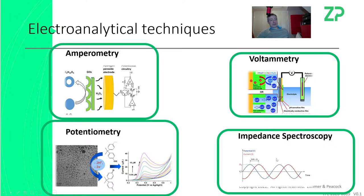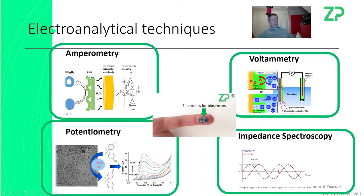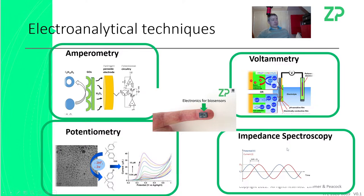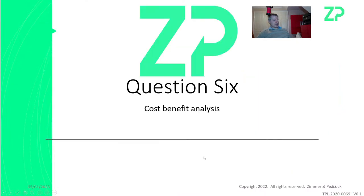That potentiostat doesn't do impedance spectroscopy — there's a different model for that. But it's okay to start, since most of our sensors are either amperometric or potentiometric. We do use impedance for the conductivity sensors, though.